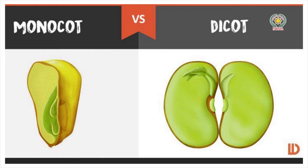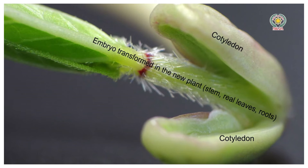What is inside a seed? A seed has a baby plant safely housed in it. A seed has three basic parts: embryo, seed coat, and cotyledon.